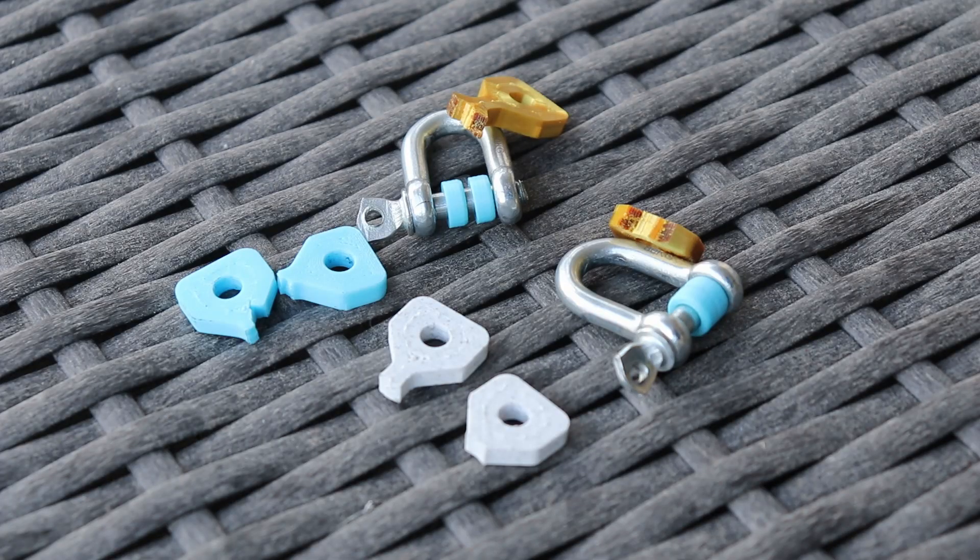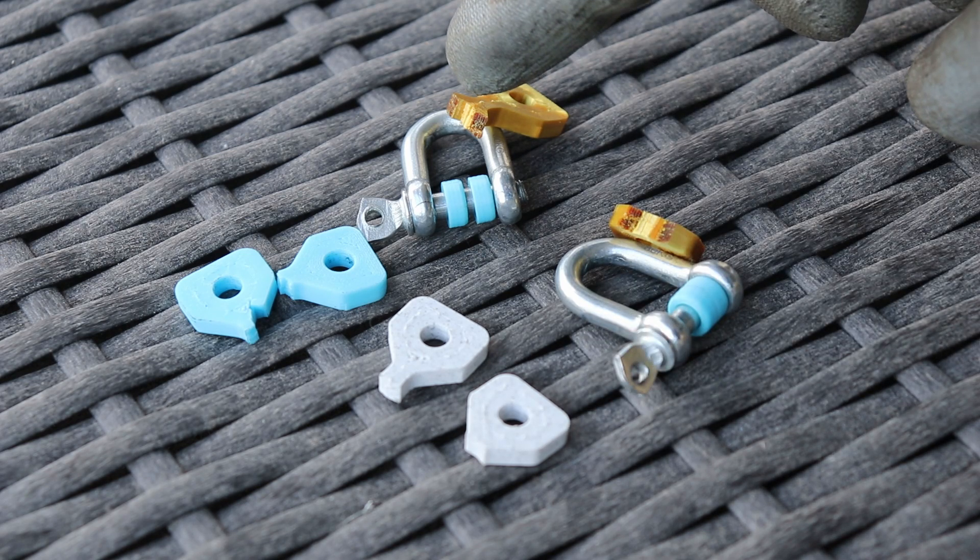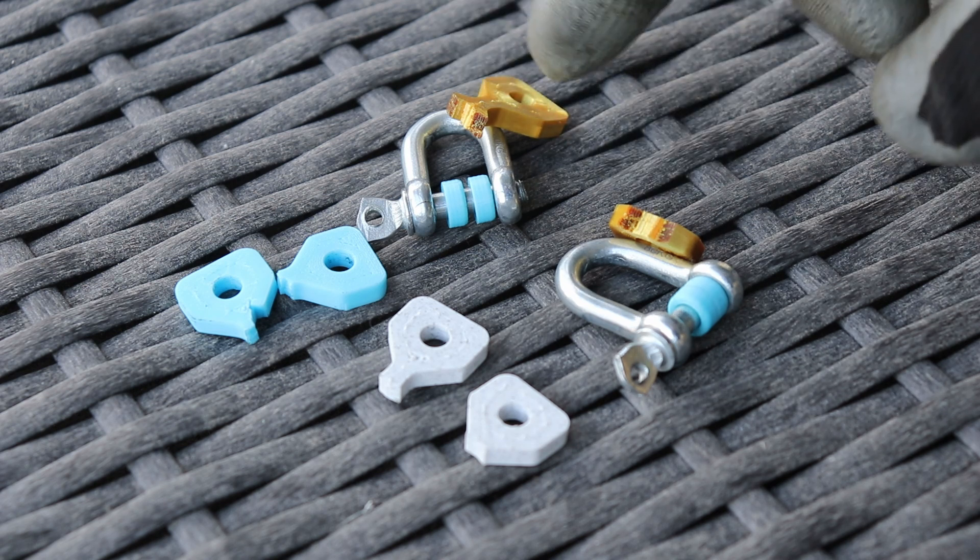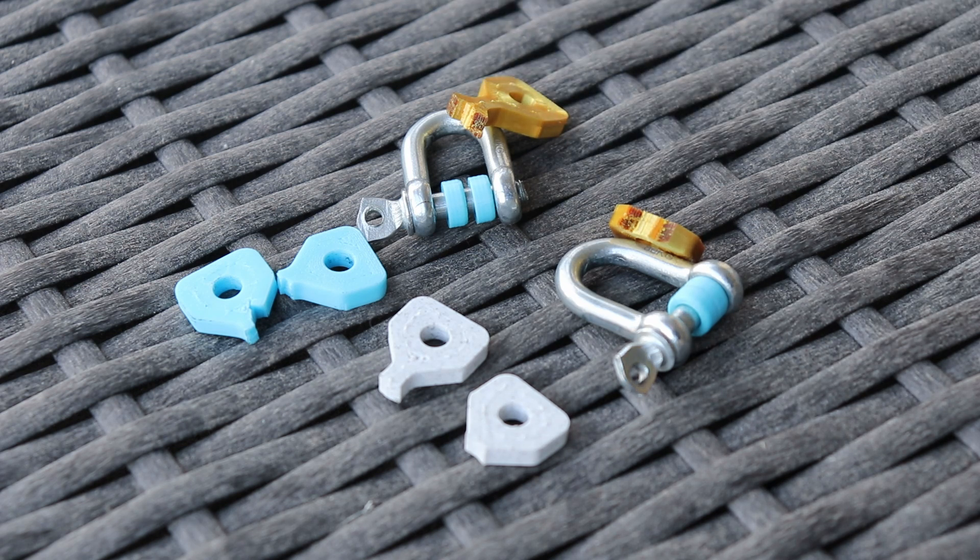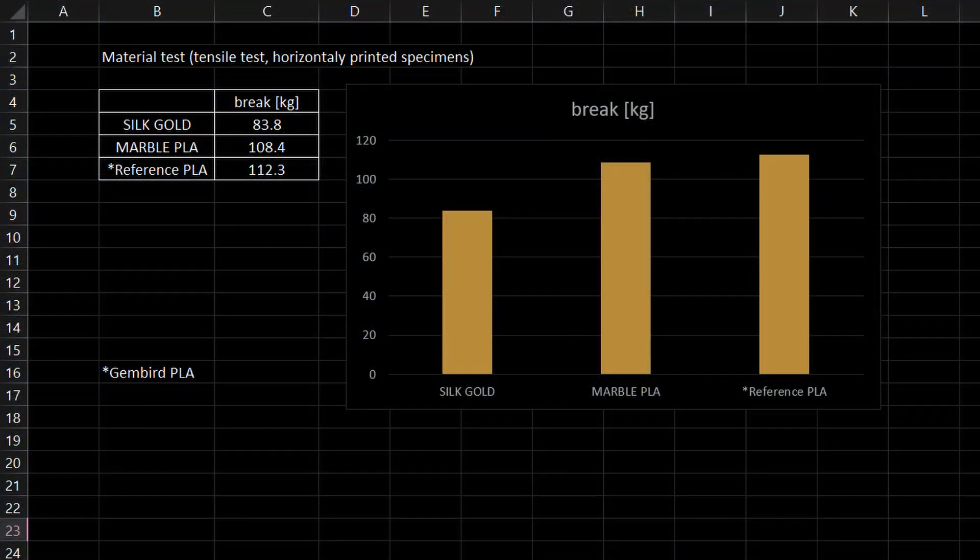And here is my test specimen. Of course we don't buy silk or marble filaments for mechanical specifications, but interesting to notice how black is inside this silk gold filament. I was just curious, so that's why I did this test. Silk gold is a little bit weaker here, but this is not a big difference between these three filaments.